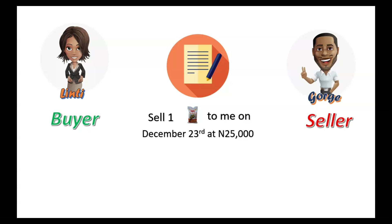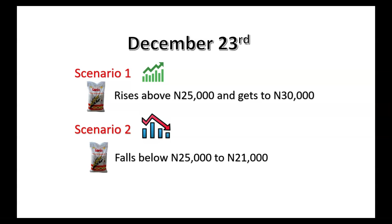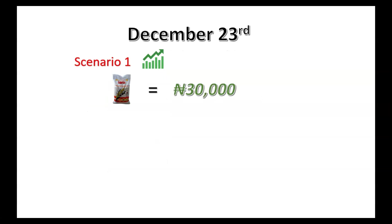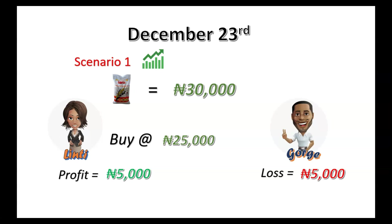On December 23rd, two things can happen. Scenario one: rice rises above 25,000 and gets to 30,000. Scenario two: rice falls below 25,000 and maybe gets to 21,000. In scenario one, no matter what happened, Lindsey must buy the rice at 25,000 and George must sell it at 25,000 — that is the contract. So with rice at 30,000, Lindsey buys the rice at 25,000 from George. Maybe she doesn't need the rice — she can go straight and sell it at the market price of 30,000, netting a profit of 5,000 naira instantly.